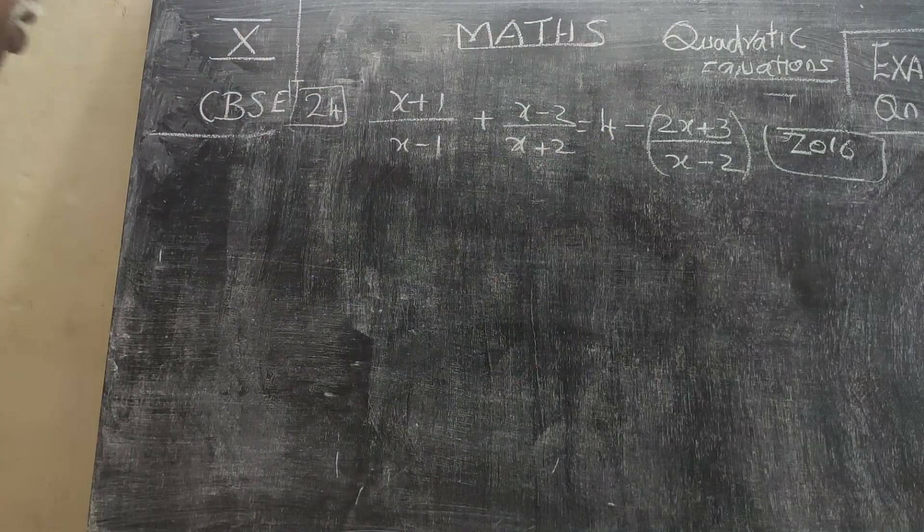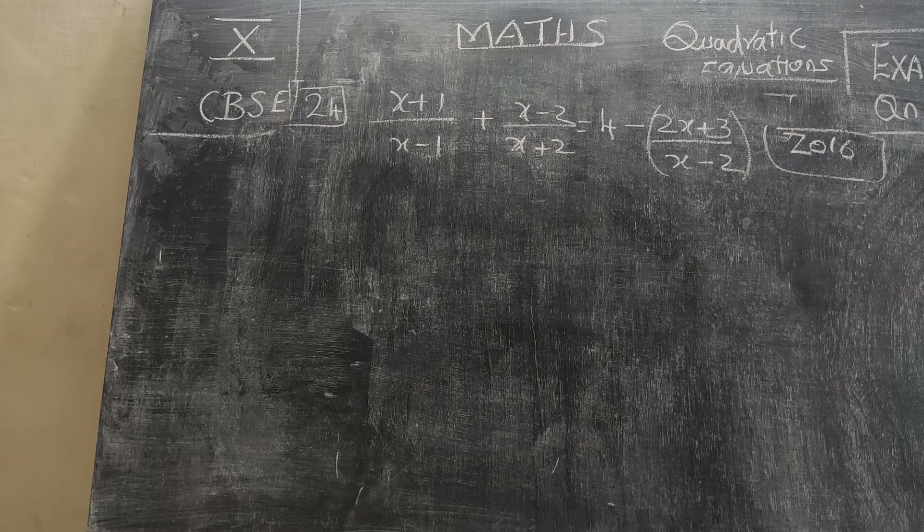Question 24: (x+1)/(x−1) plus (x−2)/(x+2) equals 4 minus (2x+3)/(x−2).